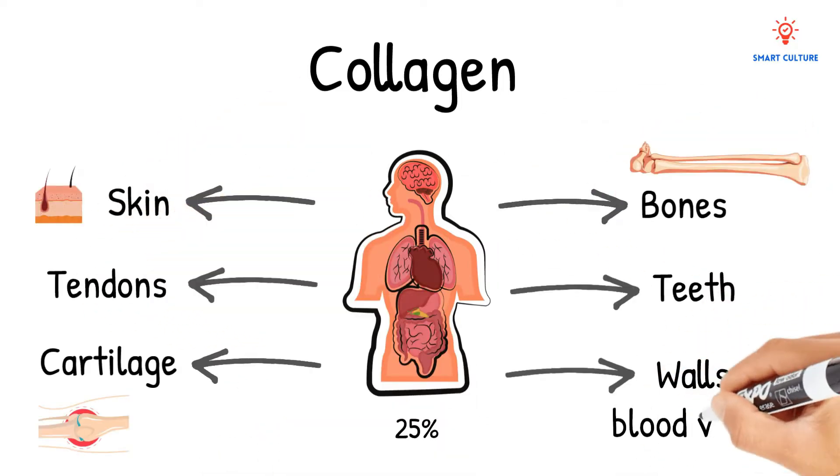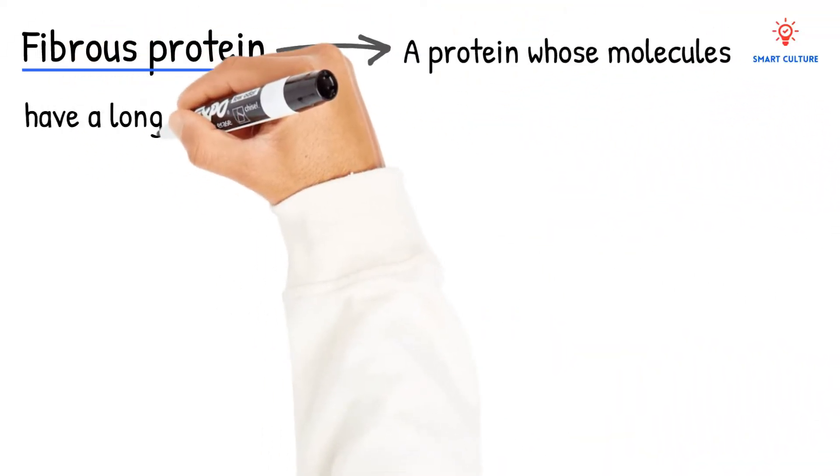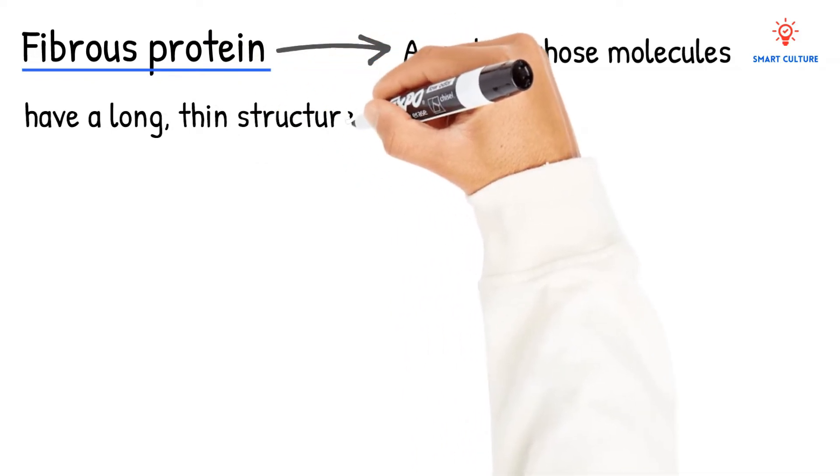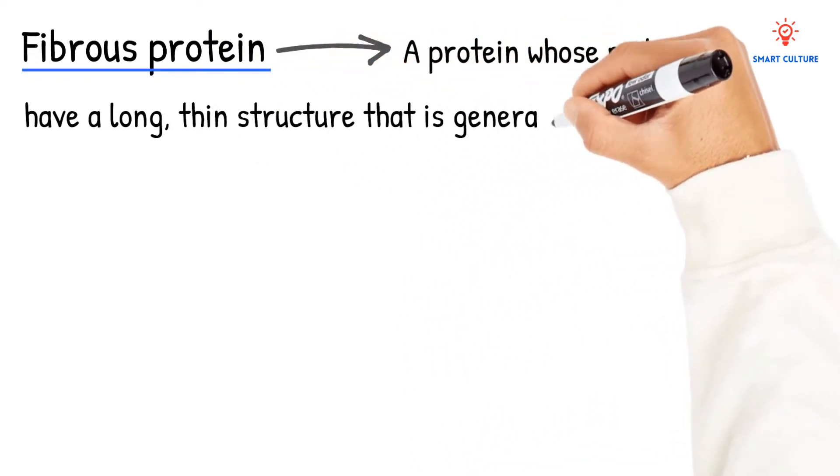So as you can see, this is a very important structural protein. Before we move on to the structure of collagen, let's take a closer look at the definition of fibrous protein. A fibrous protein is a protein whose molecules have a long thin structure that is generally insoluble and metabolically inactive.